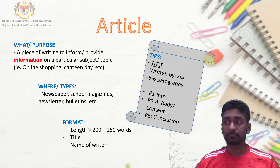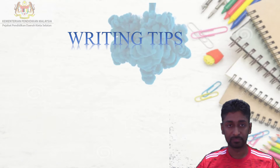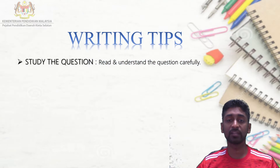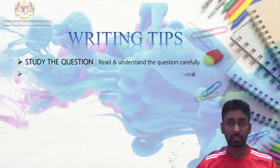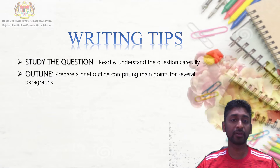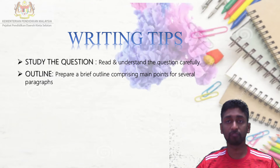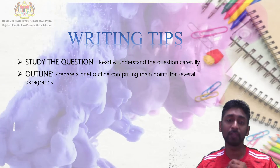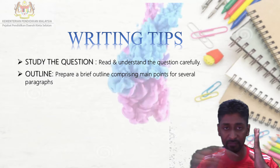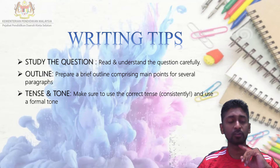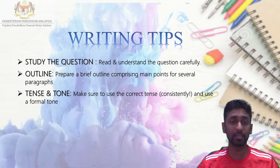Moving on to writing tips. First, study the question — read and understand it carefully and note the requirements. Next, prepare a brief outline comprising main points for several paragraphs. Before you write, read the question, identify all requirements, and prepare your outline. You must also always keep in mind your tenses and tone — make sure to use the correct tense consistently and use a formal tone.